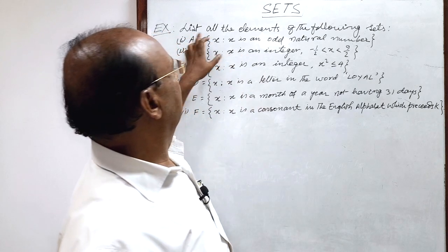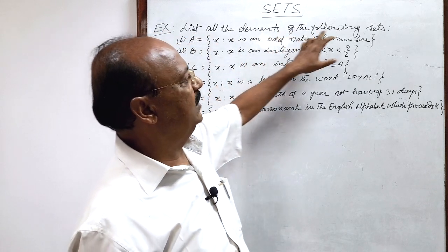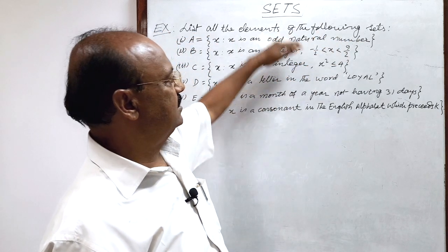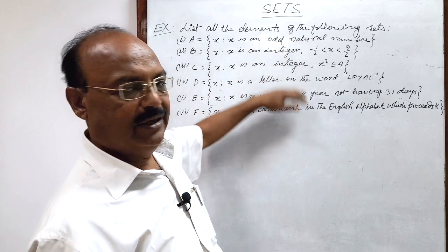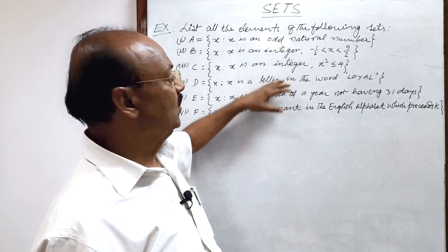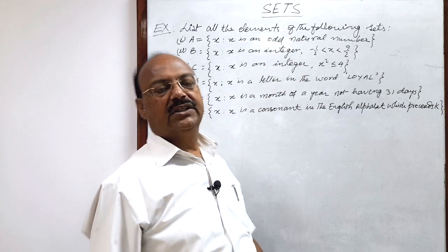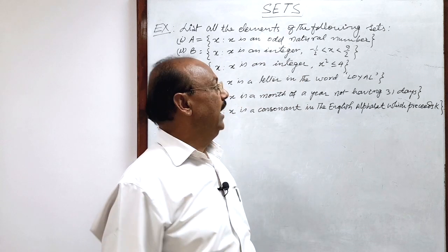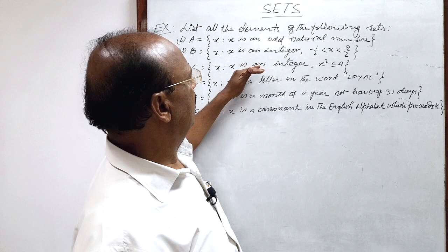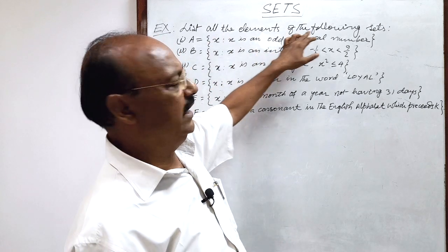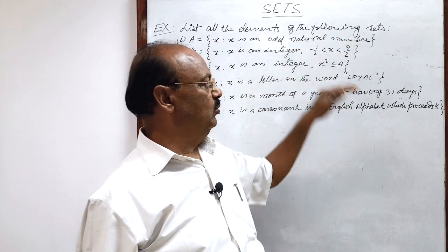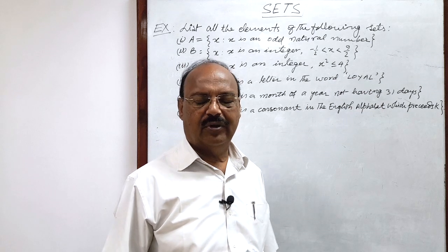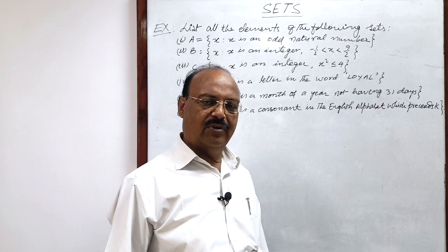So here the question is list all the elements of the following sets. These sets are given here, but elements are not mentioned clearly. So this form is known as set builder form. And here we have to convert this set in the form where we have to write all the elements. Means we have to write all these sets in tabular form, which is also known as roster form.